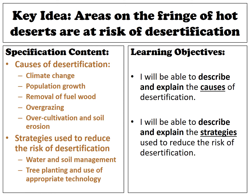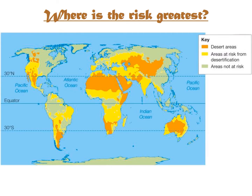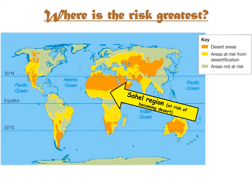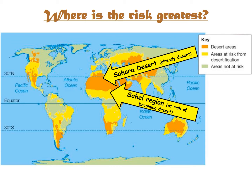With desertification, what you need to know is how it's caused and what we can do about it — that's what we'll be looking at across the next couple of lessons. On the screen you can see a map showing areas at risk of desertification. The orange areas are already deserts, including the Sahara, while the yellow sections are areas that aren't currently desert but are at risk of becoming one. The Sahara is our example of an existing desert; the Sahel is the region just to the south of it, which is at risk of becoming a desert.